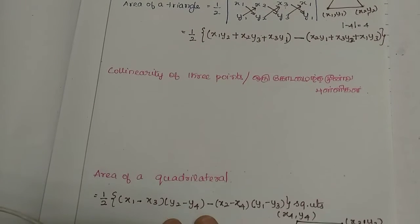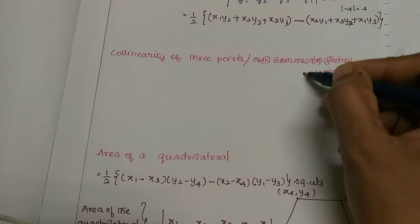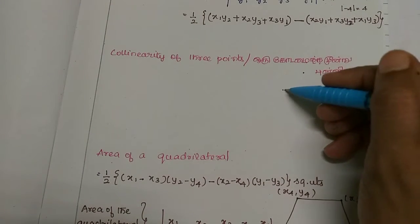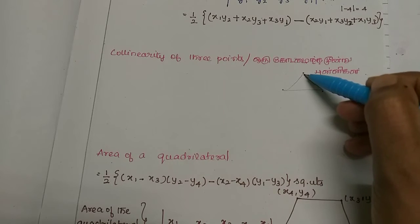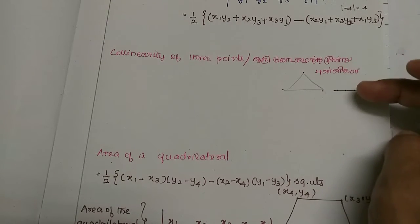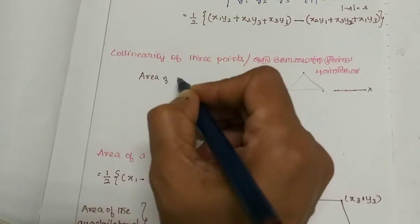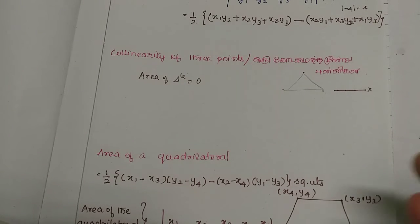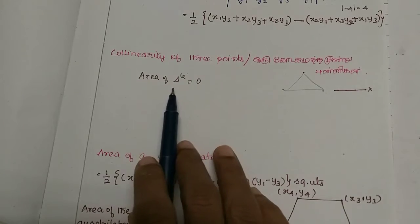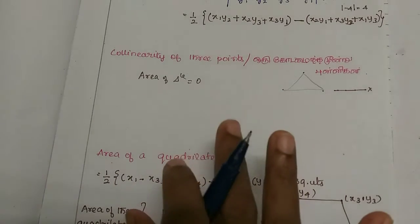Next, we will see the collinearity of three points. If three points lie on the same line in a plane, the area of the triangle formed is zero. If the three points are collinear, the area equals zero.